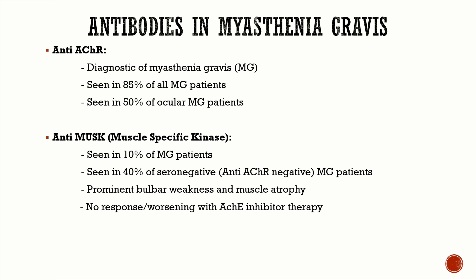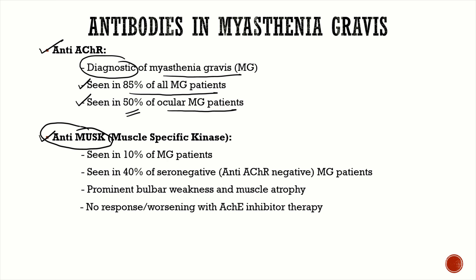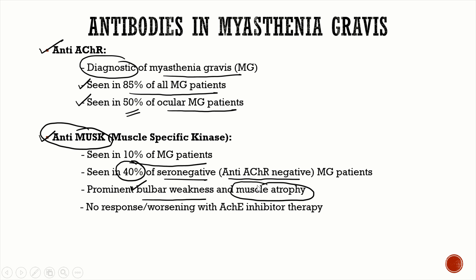Regarding antibodies in myasthenia gravis: anti-acetylcholine receptor antibodies are diagnostic and seen in 85% of all MG patients, but only in 50% of ocular MG patients. Anti-MuSK (muscle-specific kinase) antibody is seen in 10% of all MG patients, and in 40% of seronegative patients. Anti-MuSK causes predominant cranial and bulbar weakness along with muscle atrophy, and worsens with anti-acetylcholinesterase therapy.